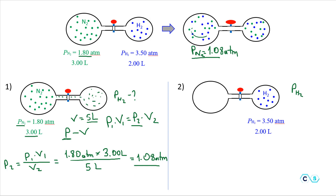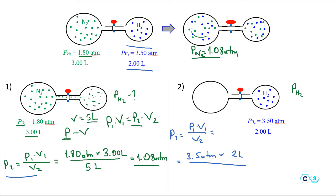Now we do the same for the hydrogen, using the same Boyle's Law expression: P₂ = P₁ × V₁ / V₂. Putting in the numbers: 3.5 atm multiplied by the initial volume of the hydrogen gas, which was 2 liters, over the final volume of 5 liters. This gives 1.4 atm — the partial pressure of the hydrogen. It also went down, and significantly so, from 3.5 to 1.4 atm, because the volume changed significantly for the hydrogen — from 2 liters to 5 liters.